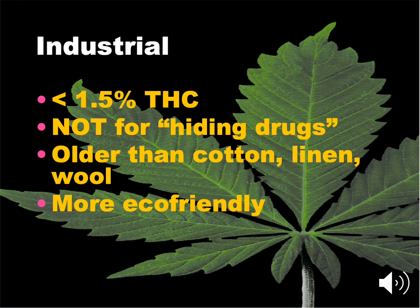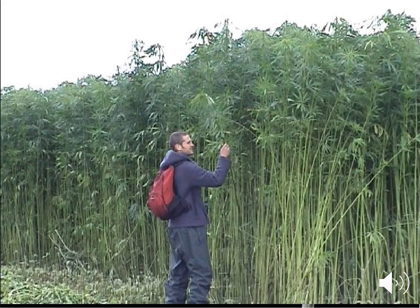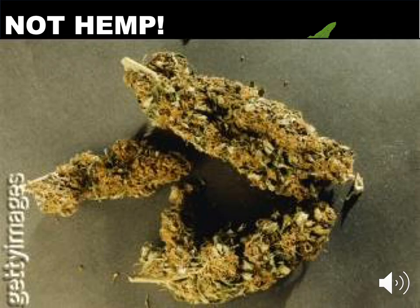This is really all about the stalk. Industrial hemp is older than cotton, linen, or wool, and apparently much more eco-friendly. So here's a chance to really appreciate a plant that could help our world. You can see these plants are taller than this guy and you don't see any buds - the leaves are relatively small too. In contrast, this is clearly not hemp. As you can see, these are some pretty big nugs from Getty Images and nobody's gonna weave that into cloth.